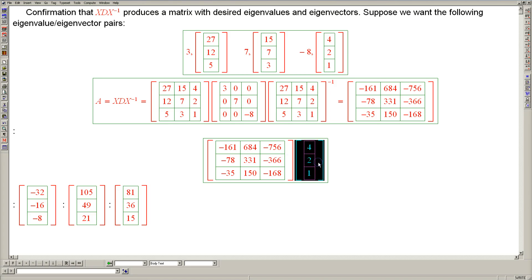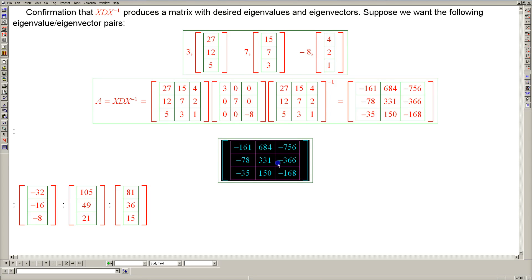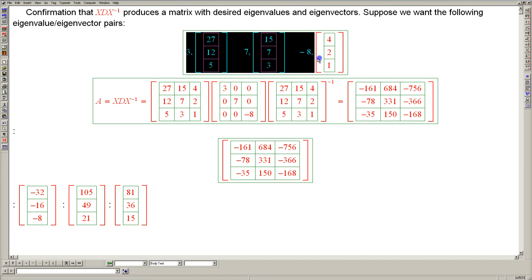So we have indeed constructed a matrix right here with these eigenvalues and corresponding eigenvectors. So our strategy works.